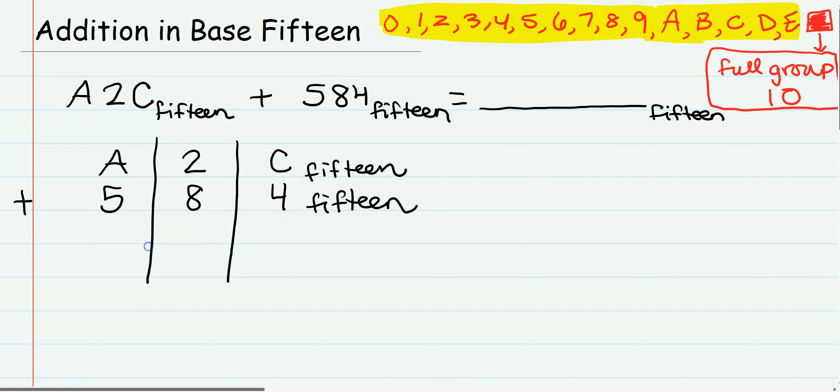A2C in base 15 is added to 584 in base 15. You don't have to draw the line, but I do because my brain works better that way. In terms of place value, this means ones, these are 15s, and then the next place value would be 15 groups of 15, which would be 225. But they are not as important as the numerals you have to write when adding, because we do have to make groups of 15.